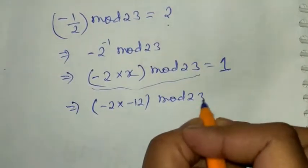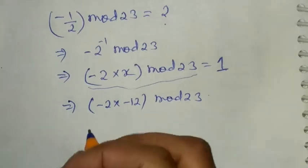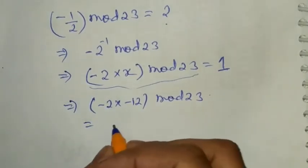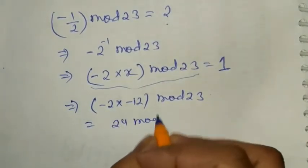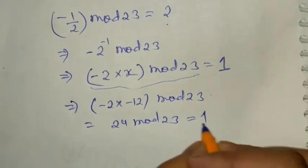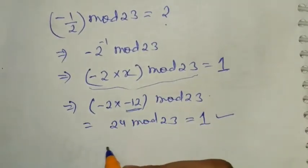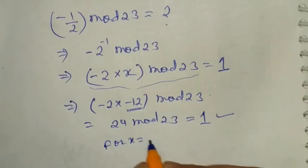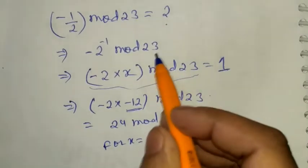Mod 23 which is 24 mod 23, which is 1. Satisfied. So for x equals to minus 12, we found out.